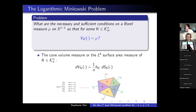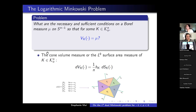The cone volume measure is 1/N times the support function times the surface area measure. If we have a discrete measure concentrated on five unit vectors, the solution should look like a five-sided figure with corresponding cone volumes matching the data. This problem is largely unsolved. Some cases are known: when the given measure is symmetric, this has been solved, and the discrete, planar, and even cases have also been solved.